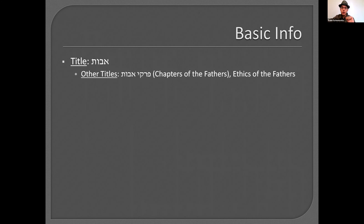The official title is Avos. Alternate titles are Pirkei Avos, which translates as 'chapters of the fathers' or 'ethics of the fathers.' Any guesses as to who we're referring to when we say Avos here? We usually refer to the same Avos, but any guesses as to who the Avos are in this context — given your involvement with Pirkei Avos?